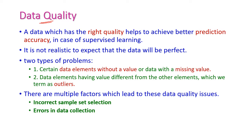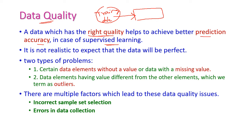Let us see data quality. Data which has right quality helps to achieve better prediction accuracy in the case of supervised learning. In supervised learning, we need to train the model using training data. The quality of this data should be very high. If there is any problem in this data, then the output of this model will not be perfect.